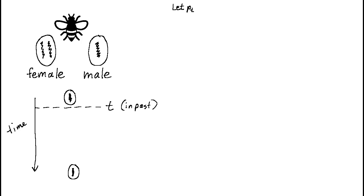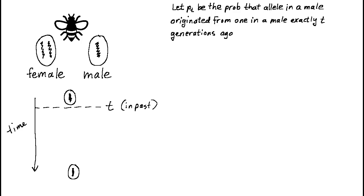Let p sub t be the answer to the question. That is, let p sub t be the probability an allele currently found in a male originated from one also found in a male t generations ago. Our goal is to devise a model for p sub t and we'll do this recursively. We suppose that we've got the model for p sub t minus 1 and express the model we're looking for in terms of that.